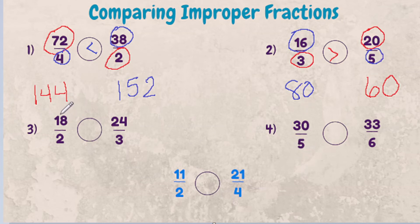Third example, 18 halves compared to 24 thirds. So let's multiply 18 times 3 and our answer is going to be 54. And we're going to go 2 times 24, which is 48. 54 is greater than 48.